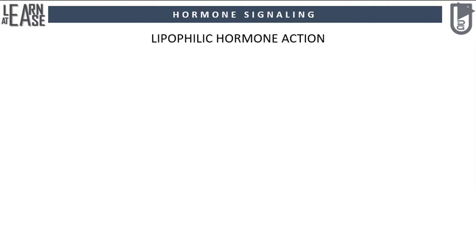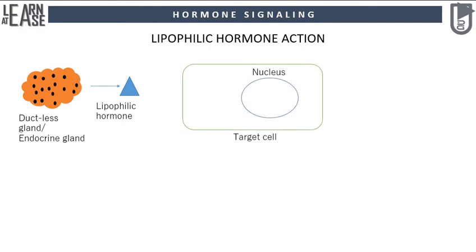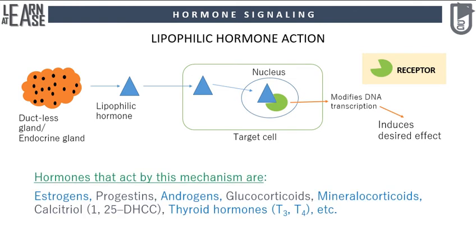I will now explain lipophilic hormone action. An endocrine gland releases a lipophilic hormone; this hormone travels in the blood and reaches the target cell. The receptor of a lipophilic hormone is present in the cell nucleus. As the hormone is lipophilic, it can easily enter the cell through the cell membrane and then enters the nucleus through the nuclear pore. Inside the nucleus it binds to the receptor and forms a hormone-receptor complex. This complex binds to the DNA and activates transcription of certain genes, which ultimately induces the desired effect. Hormones that act by this mechanism include estrogens, progestins, androgens, glucocorticoids, mineralocorticoids, calcitriol, thyroid hormones, etc.